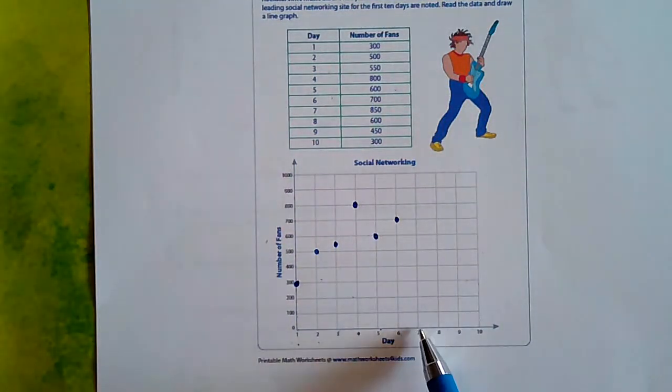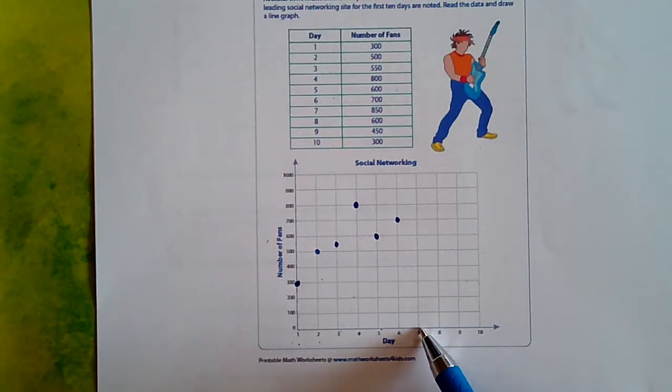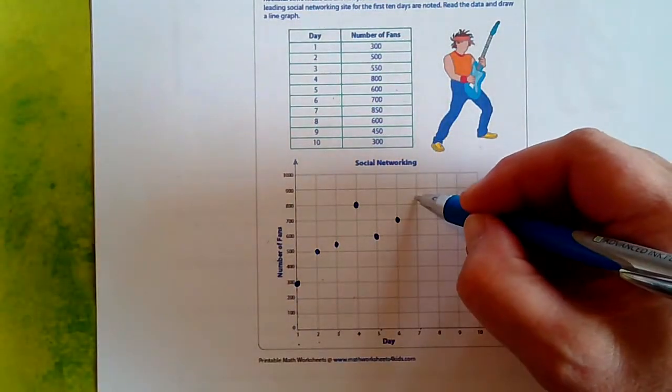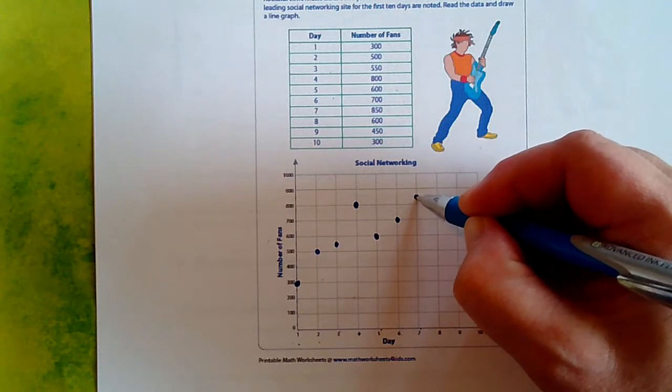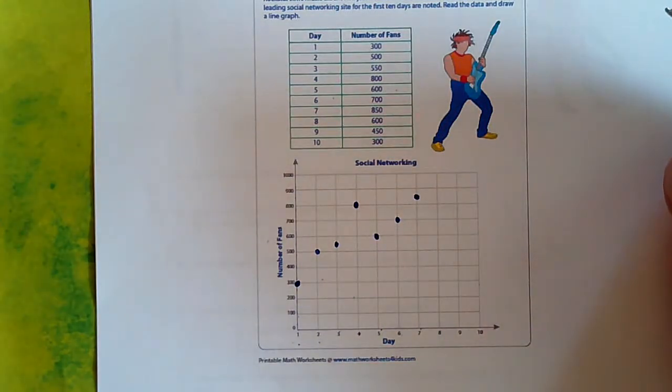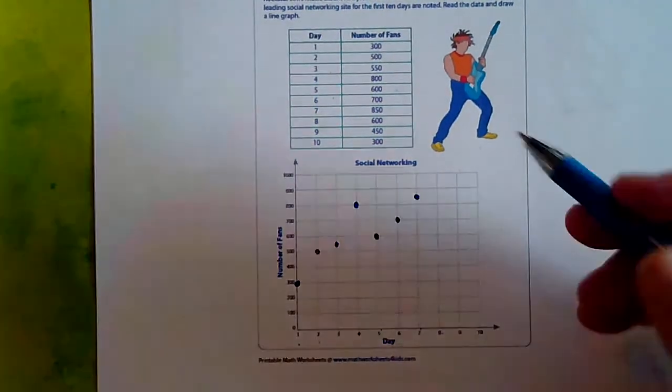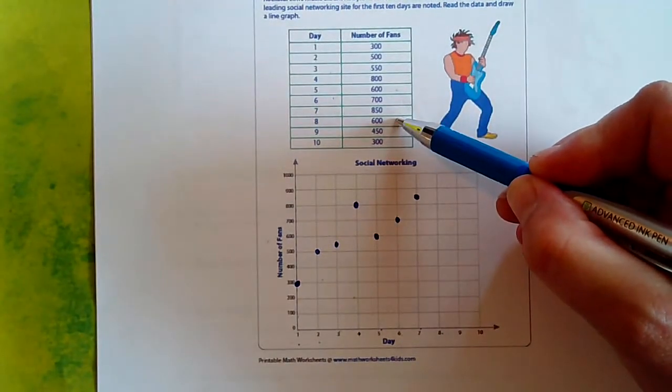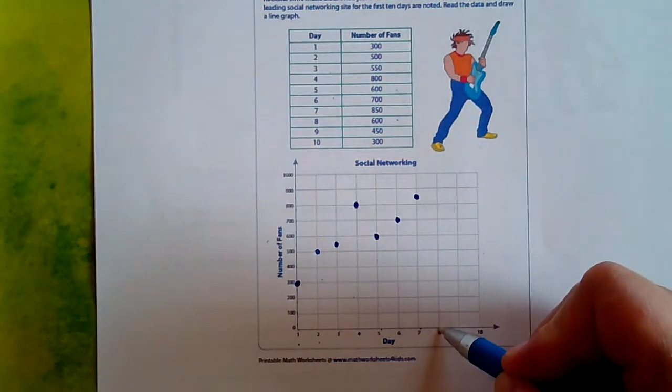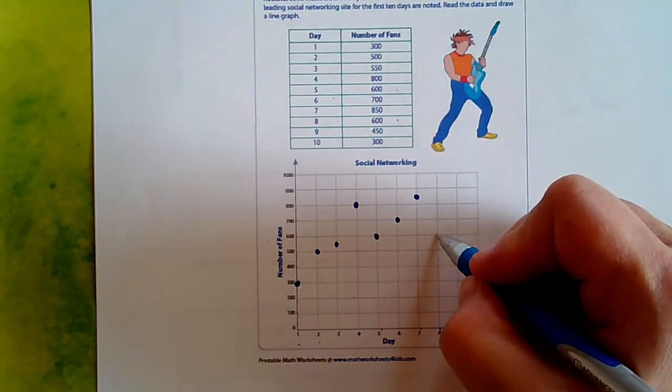On day seven, Jim had 850 fans. So that would be his peak. He has never had that many before. Okay. So there's 850, right between 800 and 900. On day eight, Jim had 600 fans. So day eight, drop some to 600.